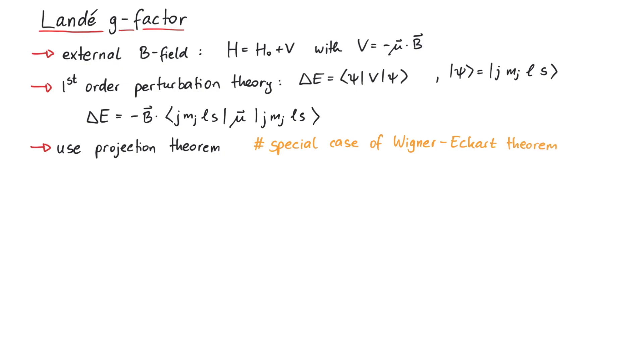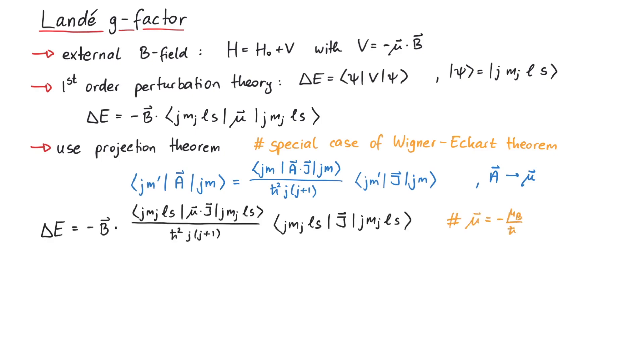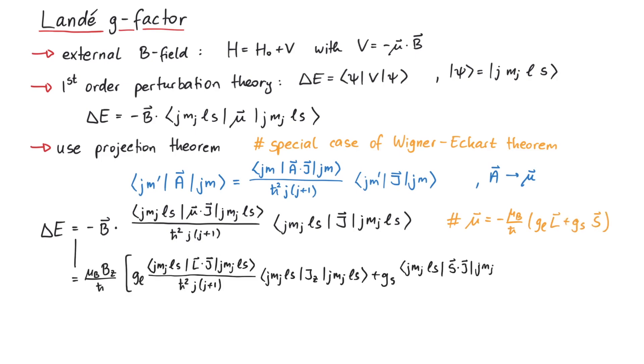Since this video is already quite long, we prove the projection theorem in another video, so here's what it states. If we want to evaluate the matrix element of a general vector operator A between states of equal j but not necessarily equal m, this can be written as the matrix element of a times j between the states jm, divided by h-bar squared and j times j plus 1, and the matrix element of angular momentum between those initial states. This projection theorem gives us a mathematically rigorous way to evaluate the matrix elements of Lz and Sz, even though we are now dealing with Ls coupling so we cannot simply use their eigenvalues, ml or ms. In fact, after applying the projection theorem, you can see the resemblance to the time averaged angular momentum from the previous derivation.